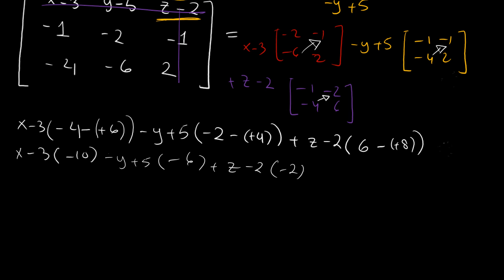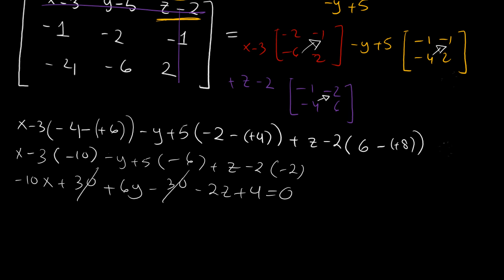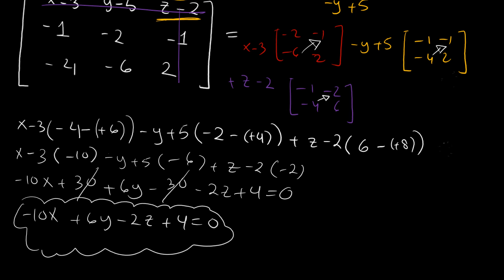Multiplying out: (x−3)(−10) gives −10x + 30; then −6y terms and −2z terms combine. After simplification, the +30 and −30 cancel, giving the equation of the plane: −10x + 6y − 2z + 4 = 0. This can also be written in the standard form Ax + By + Cz + D = 0.